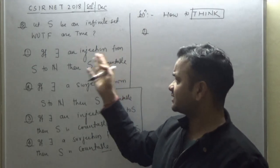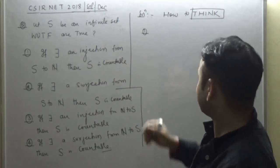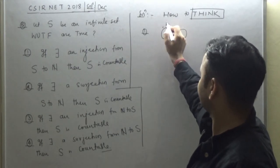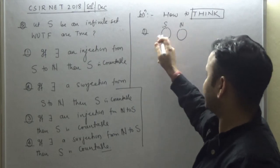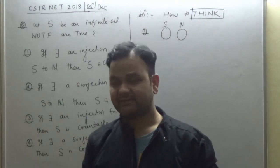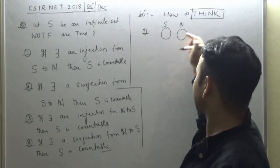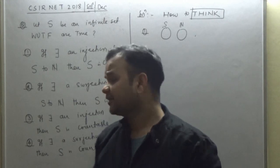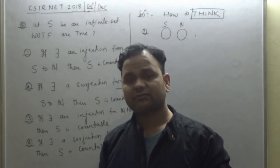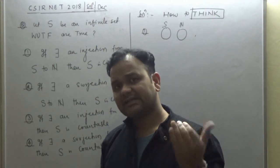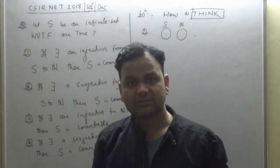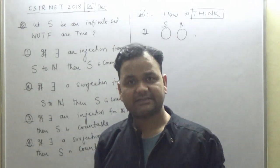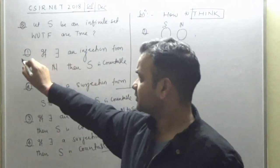First option: if there is an injection from S to N, then S is countable. This set is S, this is N. If injection exists, that means cardinality of S is less than or equal to cardinality of natural numbers. And S is already an infinite set, so an infinite set whose cardinality is less than or equal to natural numbers means cardinality of S equals cardinality of N, hence S is countable. So this is true.